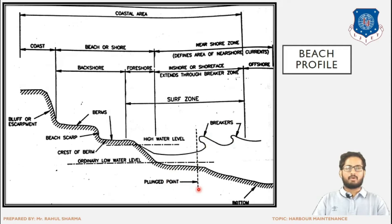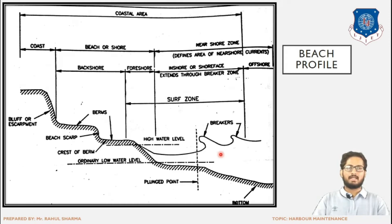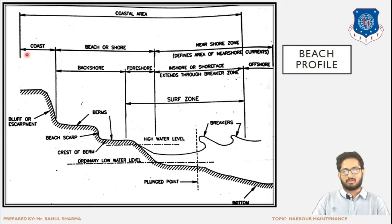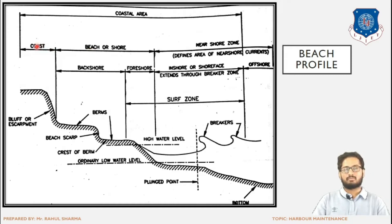The plunge point is that point after which the waves are breaking. On the left-hand side of the plunge point there will be no breaking waves — that is, no high energy waves. On the right side will be the breakers with considerable energy and height. Next, the coast is the land portion of the beach. The beach or shore is that portion of land which will come in contact with the water.